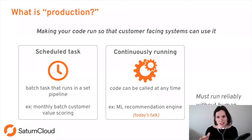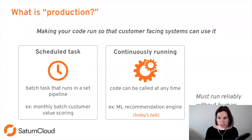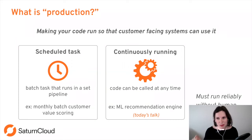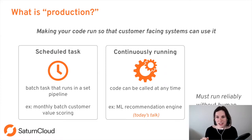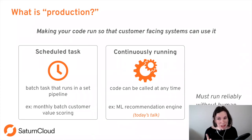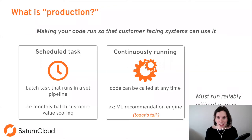There is another type of production, which is more software engineering-style: continuously running systems. If you think about a machine learning recommendation engine, it has to make new recommendations every time a customer does something. Both types of production have to continuously work without human intervention. If your code is constantly crashing or you have to manually hit start each time, that's not really production. Today we're primarily talking about the continuously running kind.